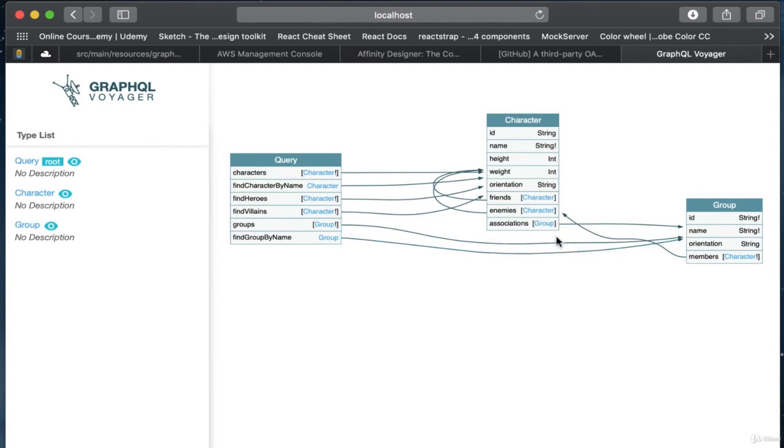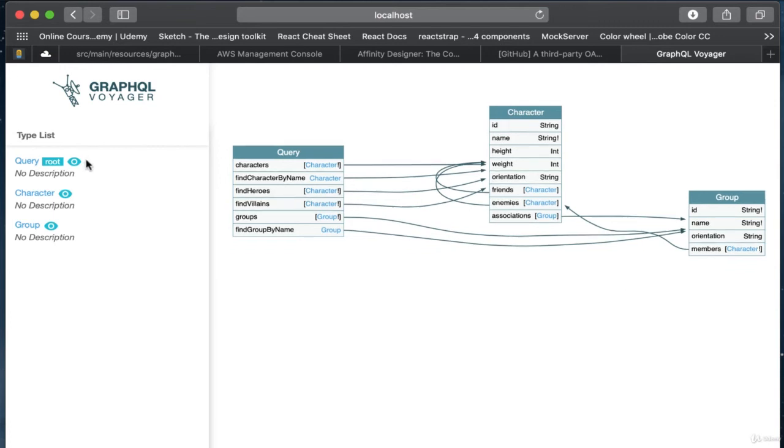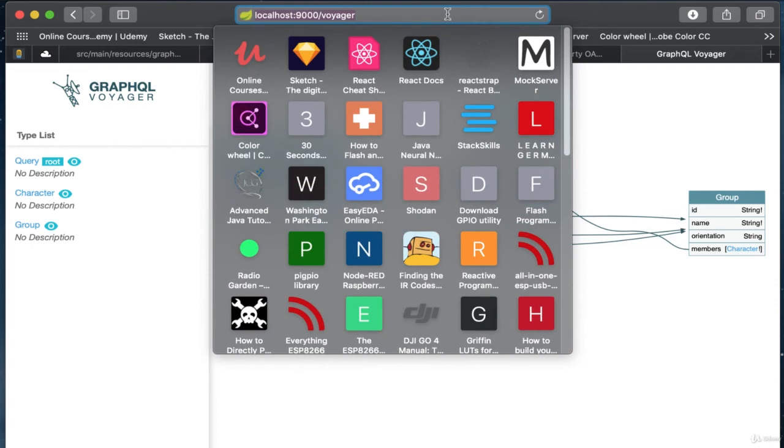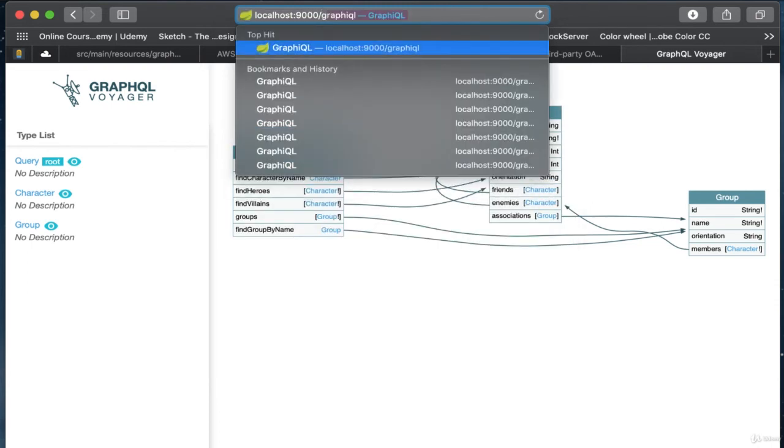So for example, we can see that this is the character type that we had been looking at just a minute ago. And we can see that, for example, a character can have an array of associations, called associations. It's an array of groups. The group object is, or group type rather, is defined here, and you can see that the associations has a direct link to this type. So this is how you make those logical ties between the two.